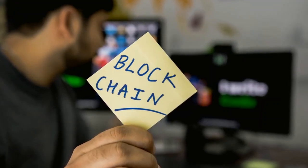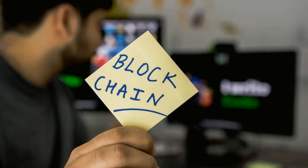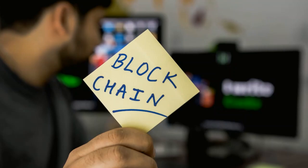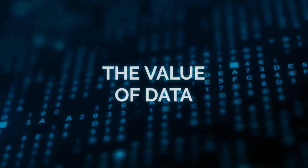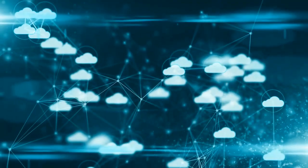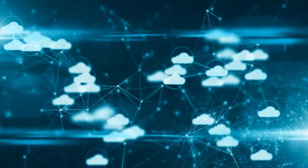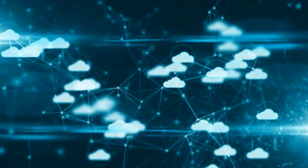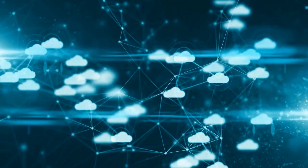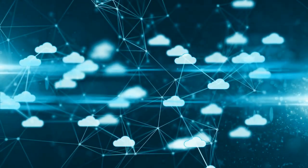The main advantages that Bitcoin brings with respect to fiat money are: Security — there is no need to provide personal information to make payments with Bitcoin, you only need a private key. The address of your wallet does not require personal information, so your personal data will always be protected.